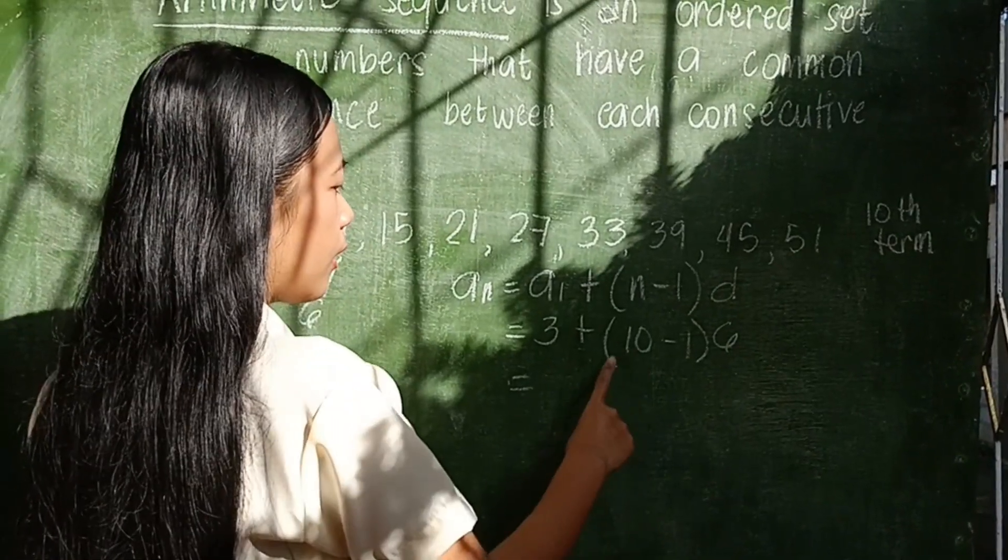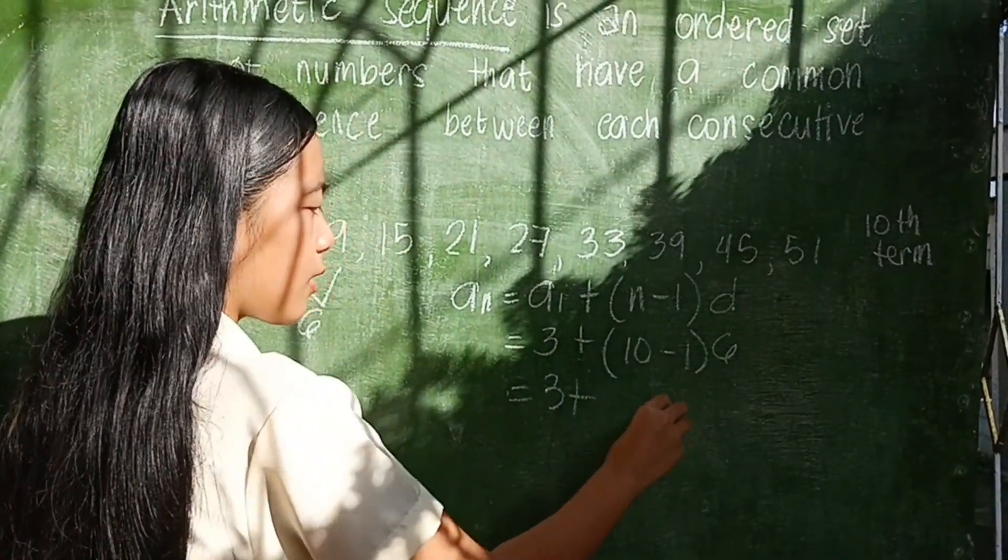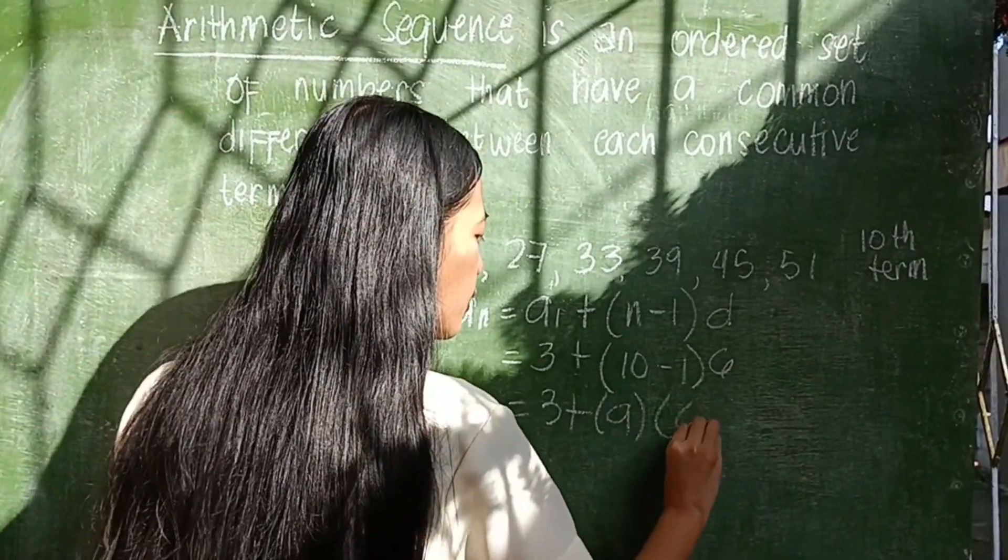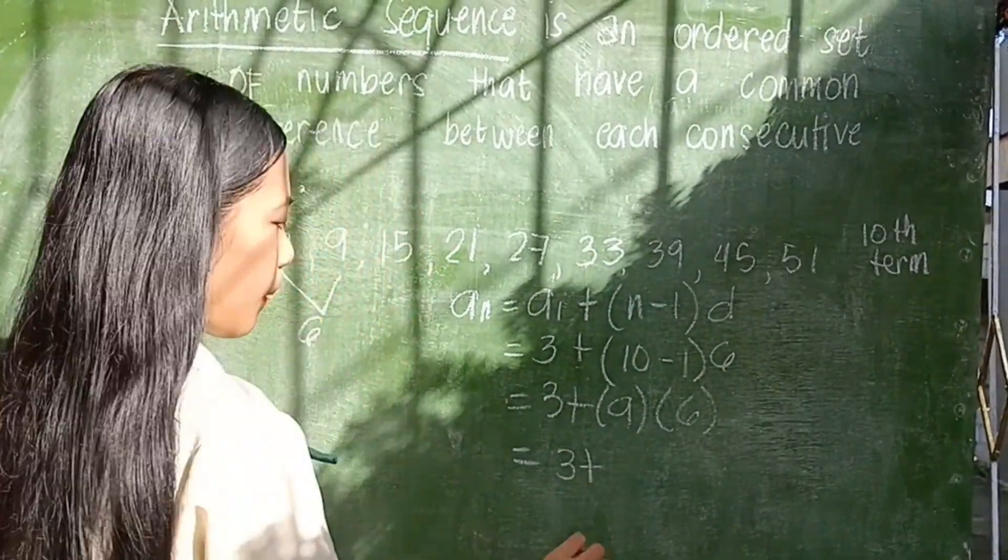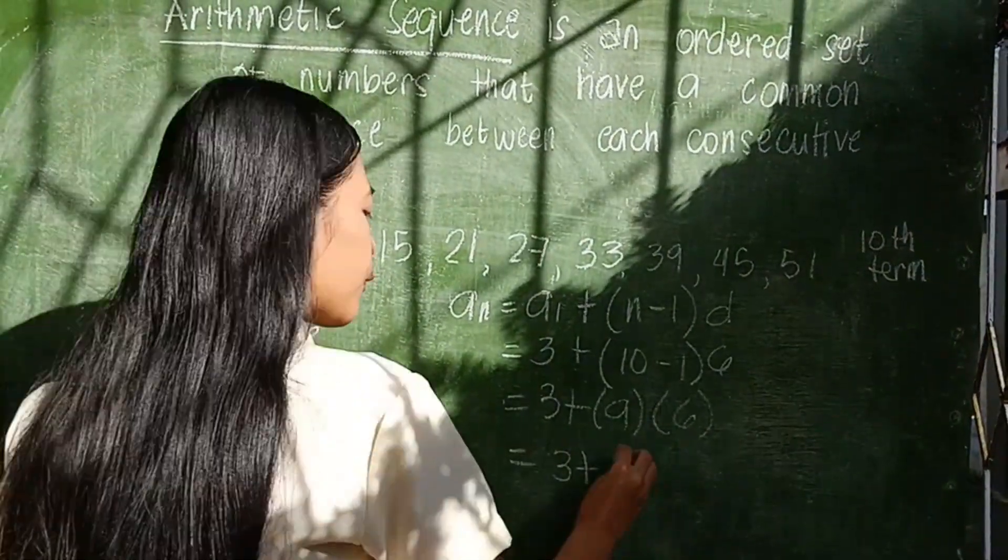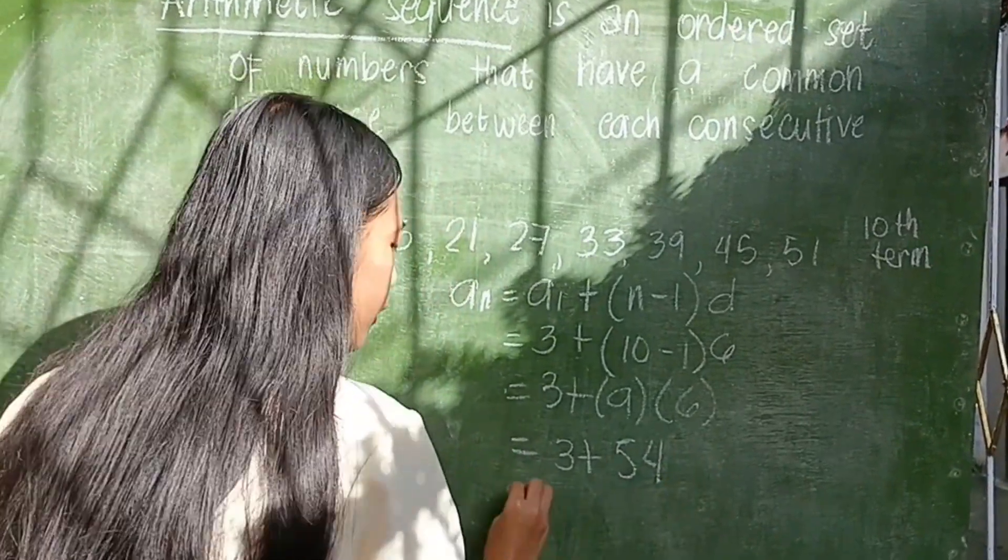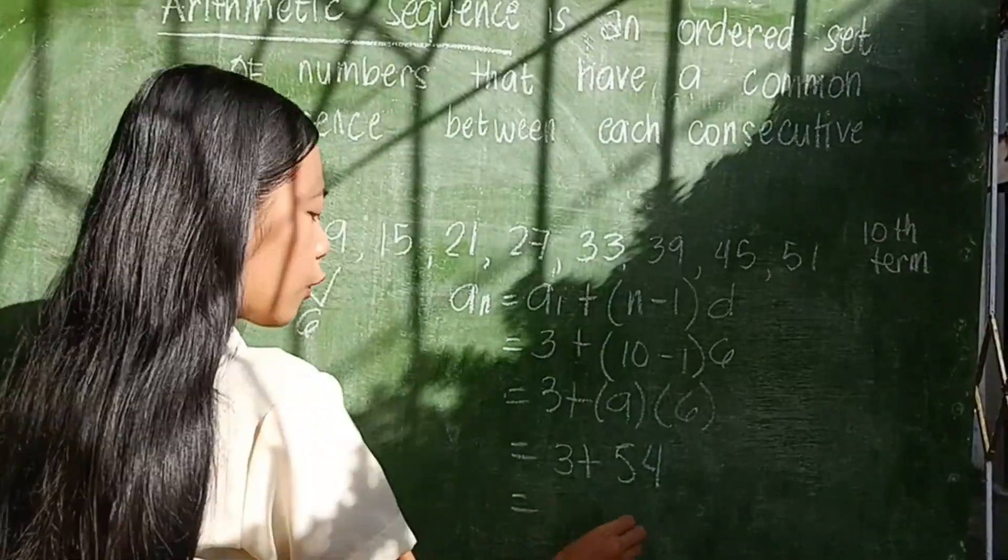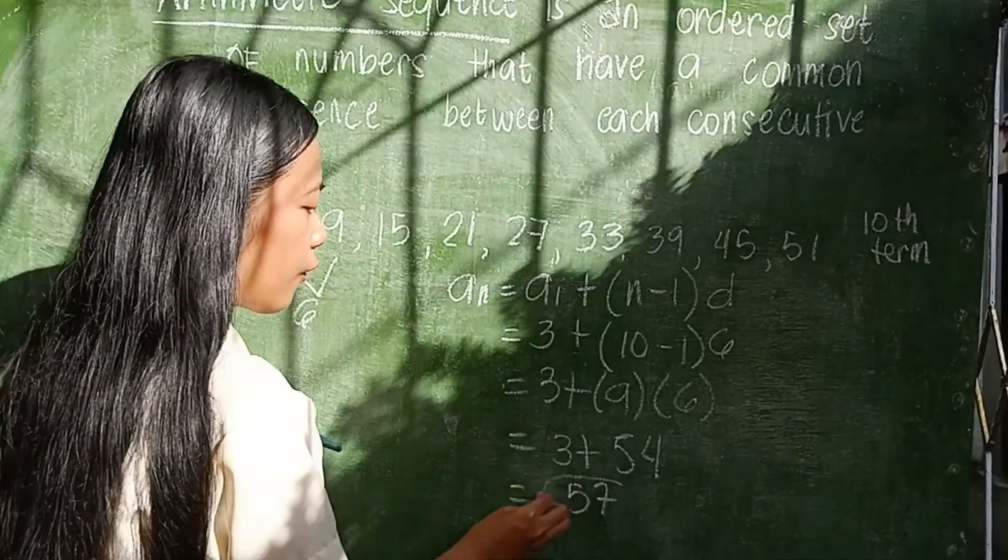Copy. 10 minus 1 is 9. Copy the number 6. And then, 9 times 6 equals 54. And then, solve this. 3 plus 54 is 57. So, our tenth term is 57.